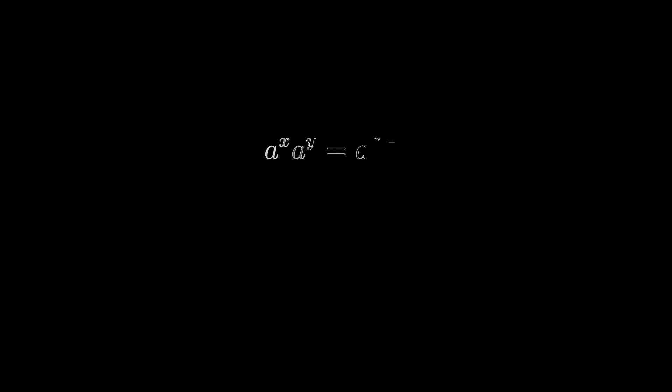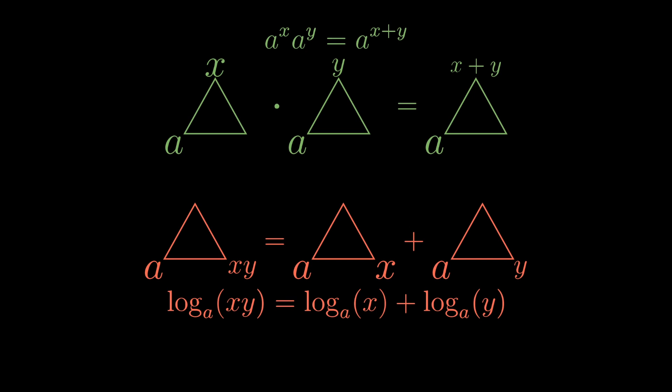Let's take another property, like the idea that a to the x times a to the y equals a to the x plus y. The corresponding fact for logarithms is that log of x times y equals log of x plus log of y. When you write this with the triangle of power, it's a little easier to see that both of these expressions are really saying the same thing. Remember, the symbol as a whole represents the number at the missing corner, so the top expression is saying that when you multiply two numbers that belong on the bottom right of the triangle, it corresponds with adding the numbers that belong to the top. But that's also what the lower expression is saying. When you multiply the numbers at the bottom right, it corresponds with adding numbers that belong to the top.